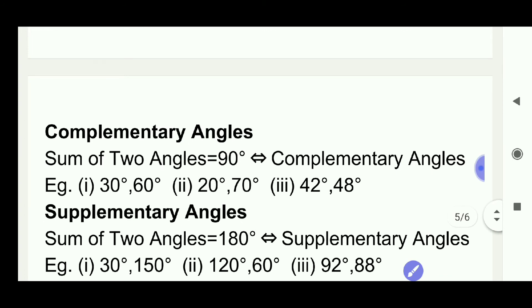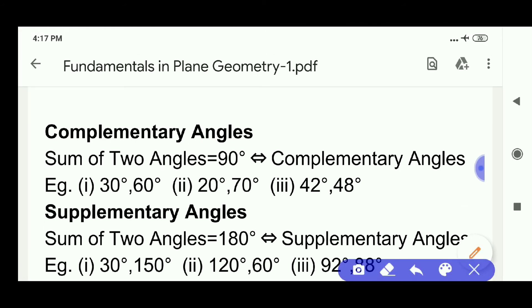Complementary angles. Sum of two angles is 90 degrees. Then they are called complementary angles. Example 30 and 60. Complementary angle of 20 degrees is 70 degrees. Complementary angle of 42 degrees is 48 degrees.